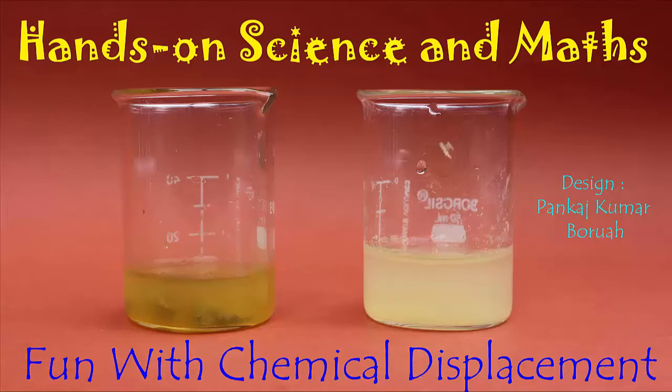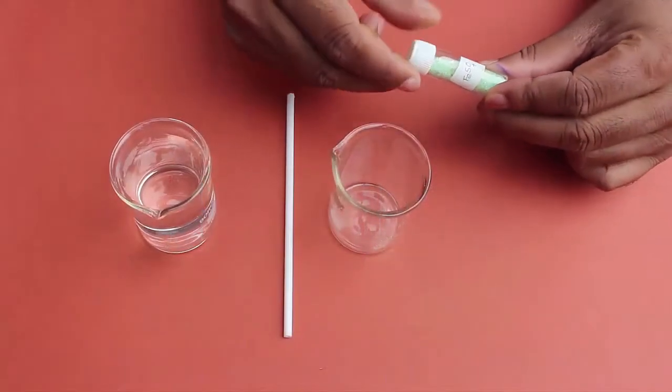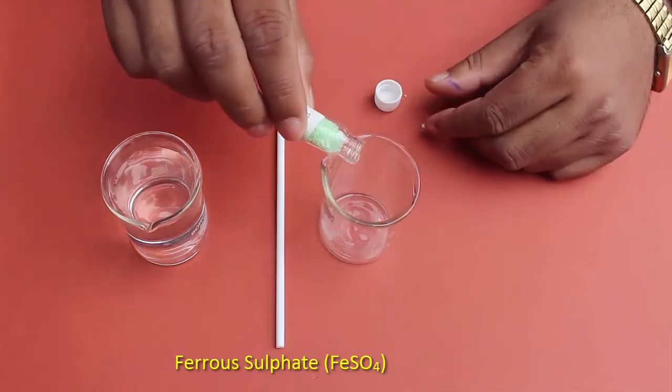First, we will make a solution of ferrous sulfate. For this, place a few crystals of ferrous sulfate in an empty beaker.